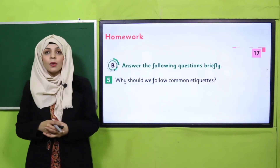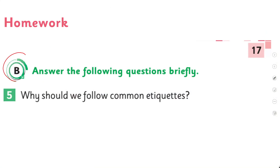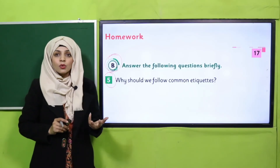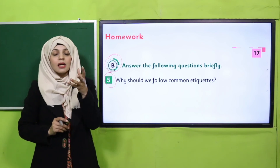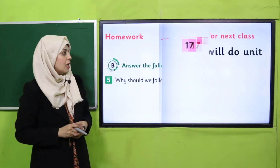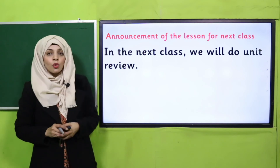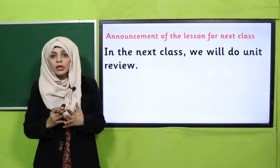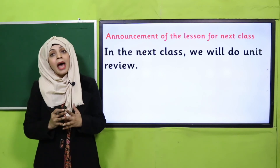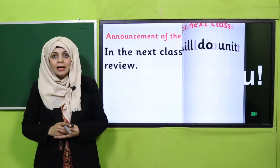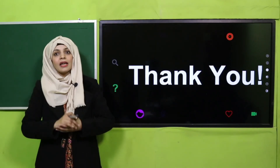Another homework is on page number 17, exercise B, question number five: Why should we follow common etiquettes? Answer: to make your society a better place, to give respect to others and earn respect in return. Write these benefits in your notebook. In the next class we will do the unit review — a complete review of unit number one — and I will also give an assessment. Until then, keep everyone around you safe, have a good day, and Allah Hafiz.